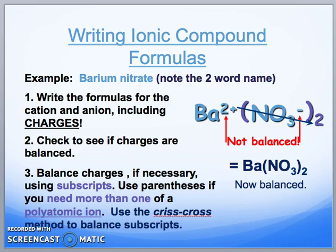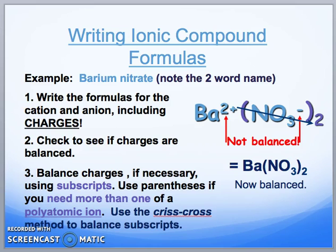Our example is barium nitrate. We have barium, which is Ba²⁺, and nitrate, which is NO₃⁻. Write the formulas of the cation and anion and include their charges — they're really important. Check to see if the charges are balanced: we have a plus 2 and a minus 1, meaning they are not balanced. Balance the charges using subscripts, and use parentheses if you need more than one polyatomic ion. Use the crisscross method: the 2 from barium and the invisible 1 from nitrate give us Ba(NO₃)₂. The parentheses are very important because that 2 applies to both the nitrogen and the oxygen.